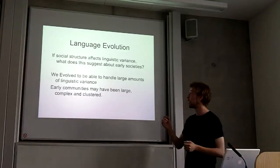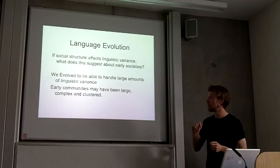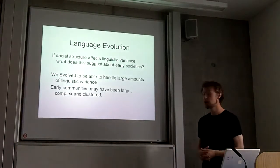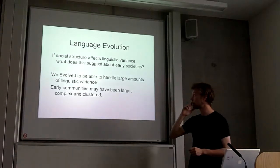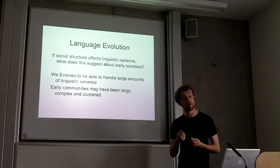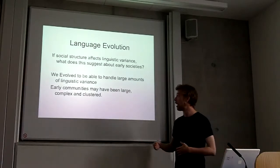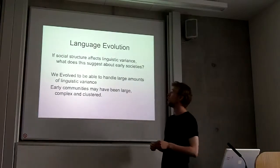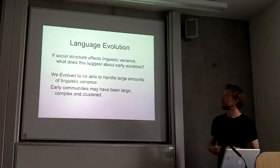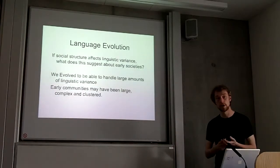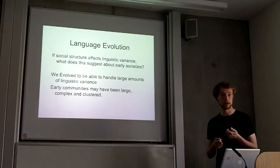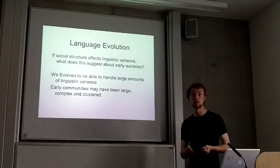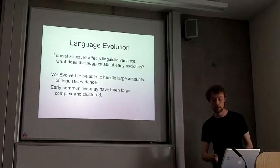In the wider picture, if social structures affect linguistic variants, then we might be able to infer things about the kinds of societies in which language evolved. Specifically, if we evolved to be able to handle a large amount of linguistic variance, if we evolved to be able to learn two languages very easily, communities might have been large and complex and clustered. This is in line with Dunbar's theories of language as a tool to construct and maintain social relationships in a complex community.